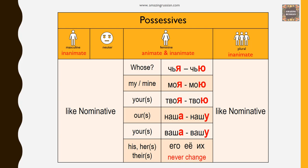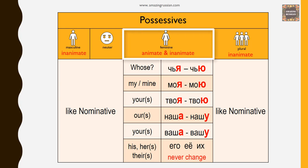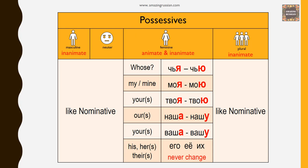Possessives: only feminine possessives change endings in the accusative. Question word чья → чью. Моя → мою. Твоя → твою. Наша → нашу. Ваша → вашу. Его, её, their — их — don't change.